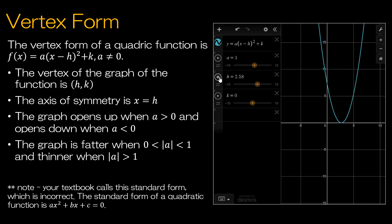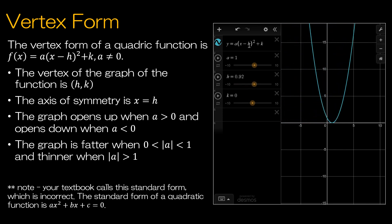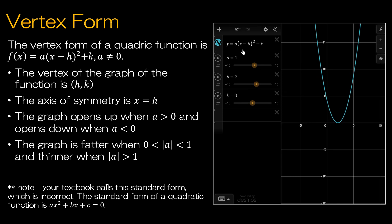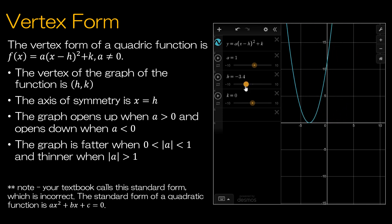I want to point one thing out: vertex form is written as (x − h)². So even though h might be positive 2, the function looks like x − 2. A minus 2 actually means the vertex is to the right. Always keep in mind you change the sign: if h is written as −3.4 in the function, the x-value of the vertex is actually +3.4. Always take the opposite sign of what's written for the h value.